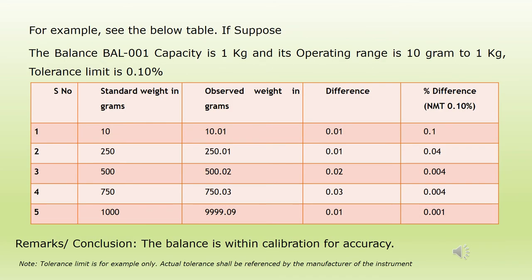For example, if the balance capacity is 1 kg, the operating range is 10 grams to 1 kg, and the tolerance limit is 0.10%, and it is calibrated using 10, 250, 500, 750, and 1000 grams — the difference between standard weight and actual weight is calculated, then the percentage difference is calculated. If the percentage differences are within the tolerance limit, the balance is said to be within calibration for accuracy.